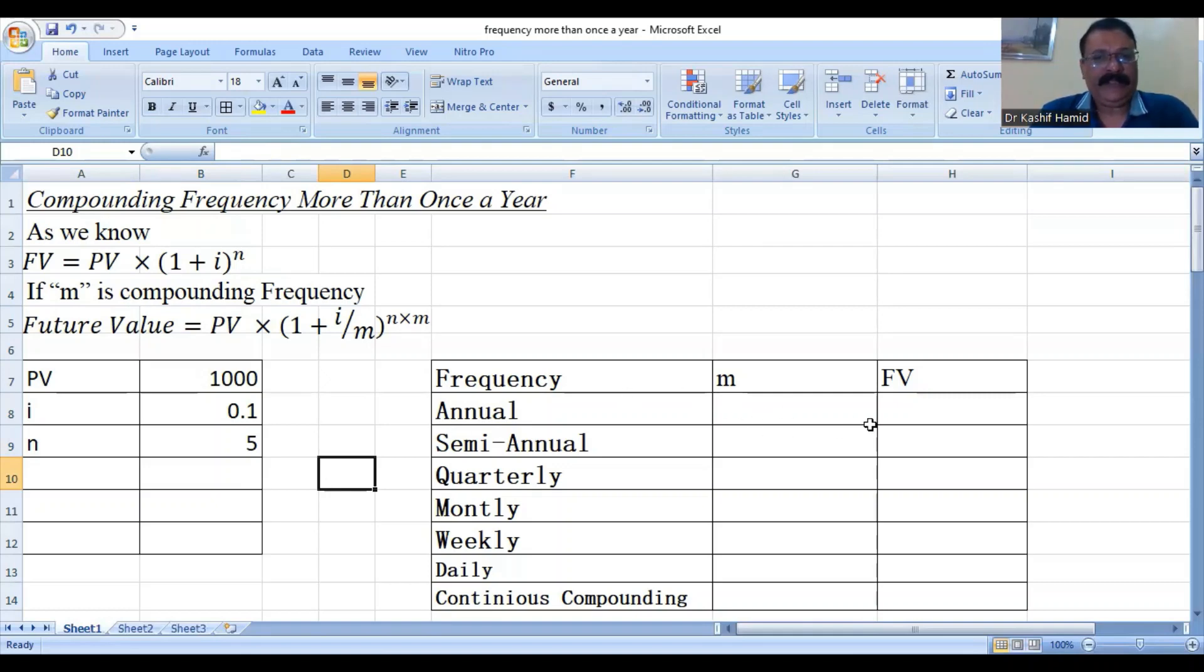In our first computation, in first instance, we will have to assign the values of the frequencies. For annual, the compounding frequency is 1, for semi-annual, the compounding frequency is 2, for quarterly, the compounding frequency is 4, for monthly, the compounding frequency is 12, for weekly, it is 52 and for daily, it is 360 days and for continuous compounding,